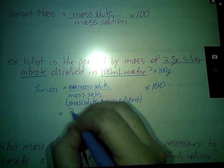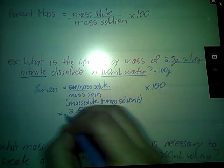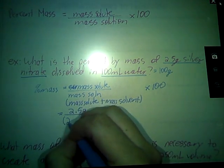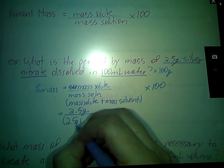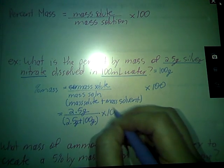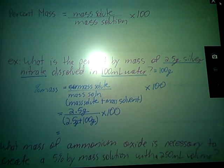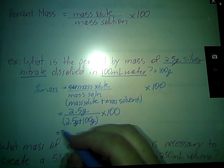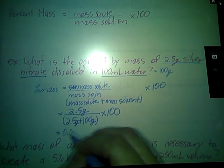So mass of our solute was 2.5 grams. Mass of solution is going to be 2.5 grams plus our 100 grams. So that's 2.5 divided by 102.5. Gives us 0.024.